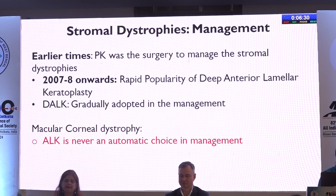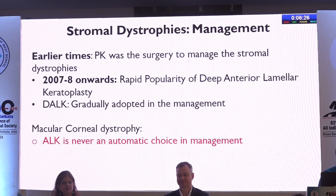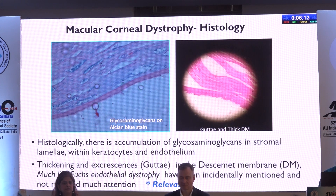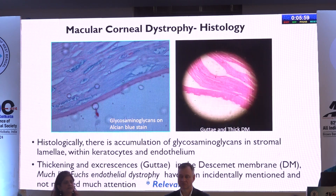Over time, we have realized that DALK may not be an automatic choice in management, and we have to have certain considerations when we plan management in these cases. Looking into histology, it shows accumulation of glycosaminoglycans within the stromal lamellae, keratocytes, and endothelium. Apart from this, there is also thickening and excrescences or guttae in Descemet's membrane, much like what is seen in Fuchs endothelial dystrophy. These have been mentioned earlier incidentally but have not received much attention, and this is a very important point of great relevance in management.